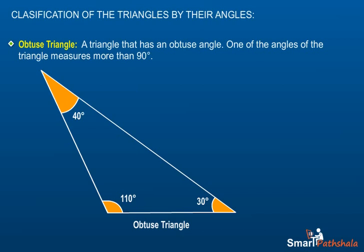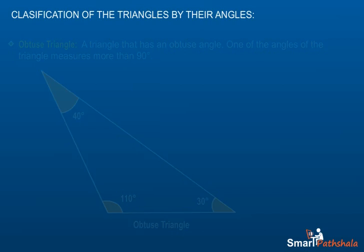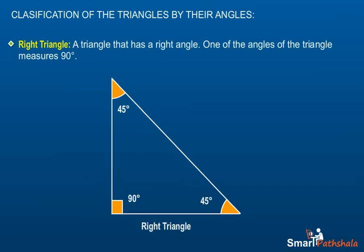Obtuse Triangle. A triangle that has an obtuse angle. One of the angles of the triangle measures more than 90 degrees. Right Triangle. A triangle that has a right angle. One of the angles of the triangle measures 90 degrees.